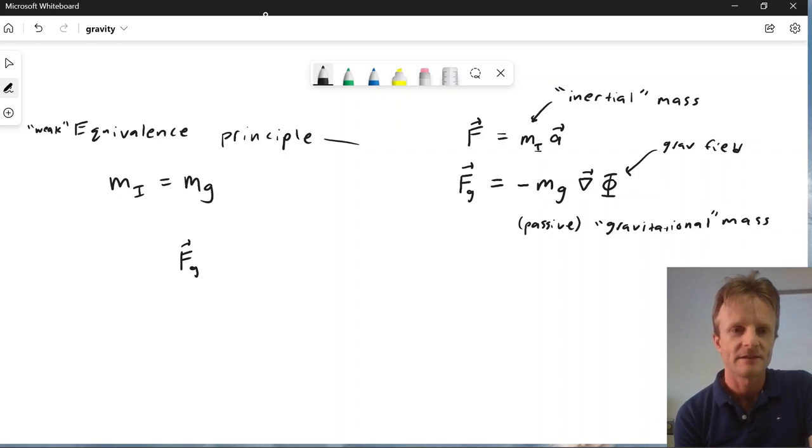And so then what happens is if the external force you're feeling is the gravitational force, then if we write F_g equals m inertial times a, but F_g was also equal to minus m gravitational gradient of phi,